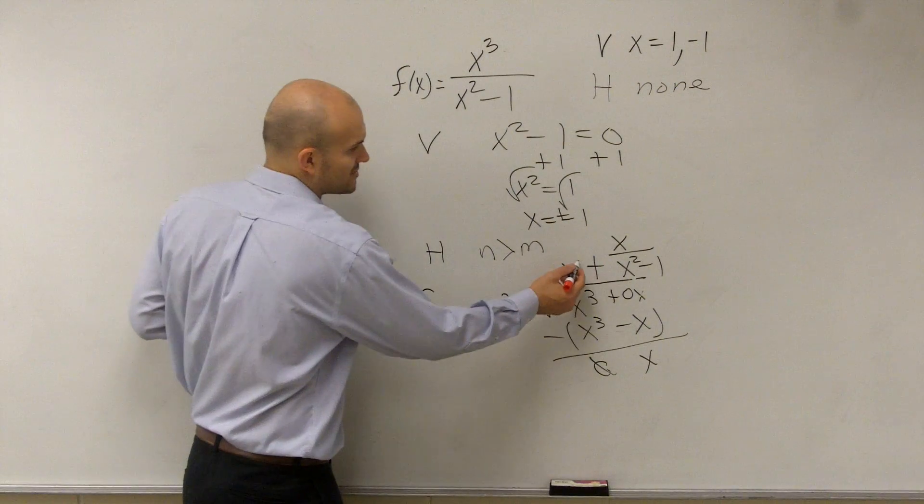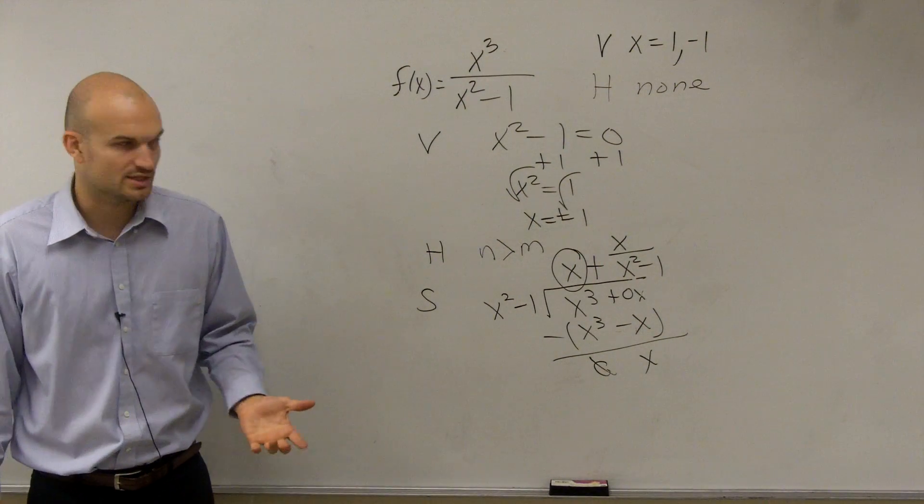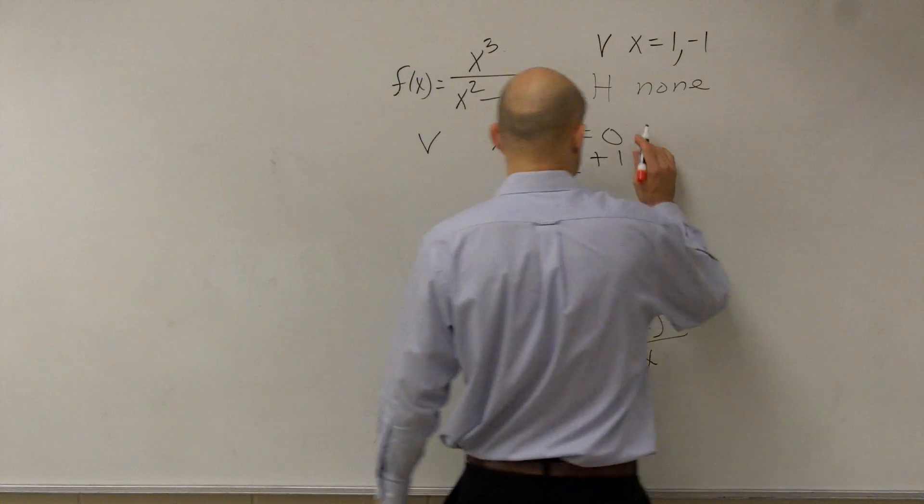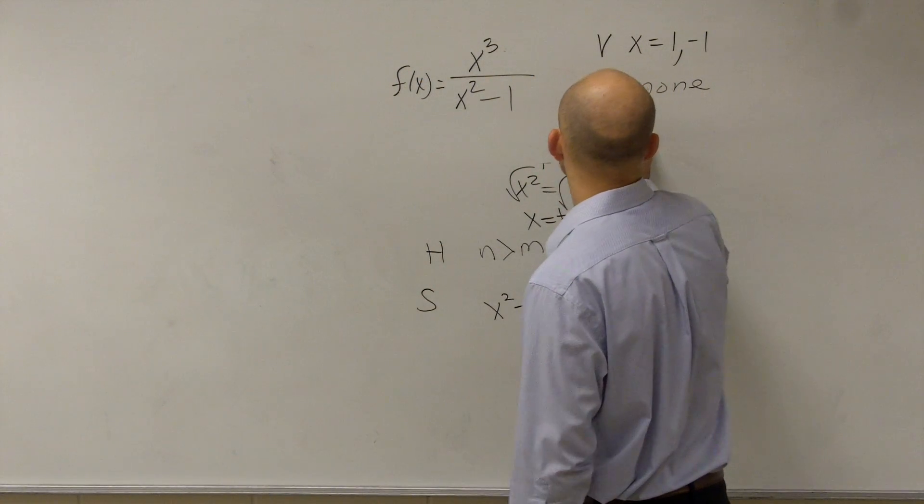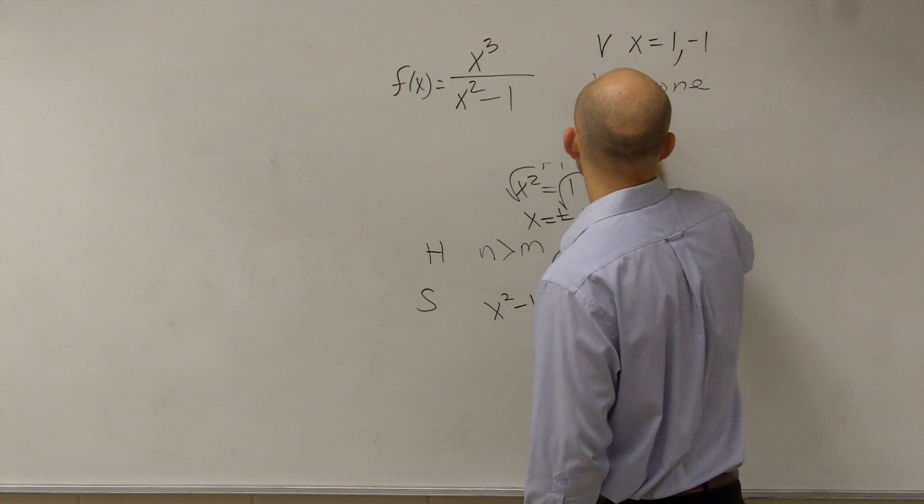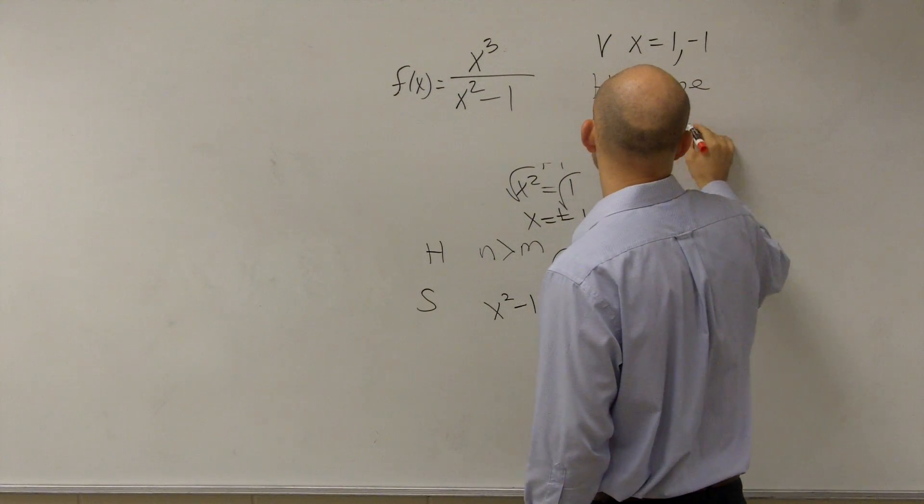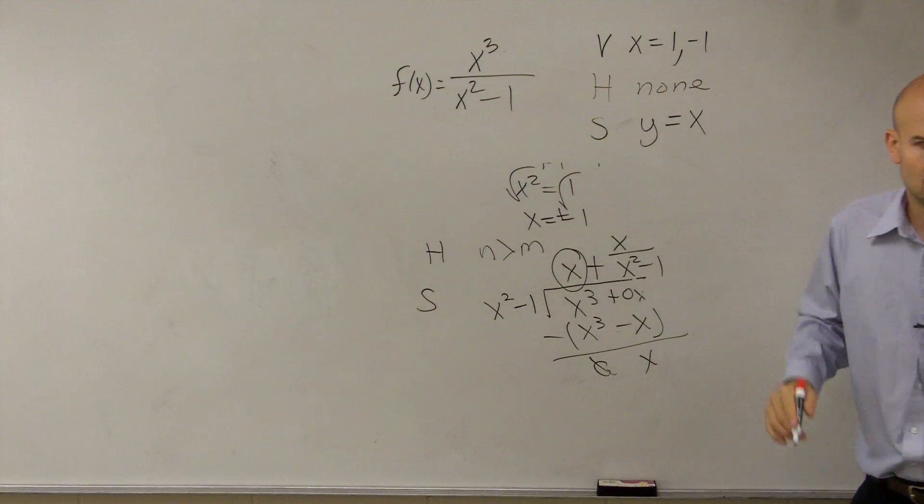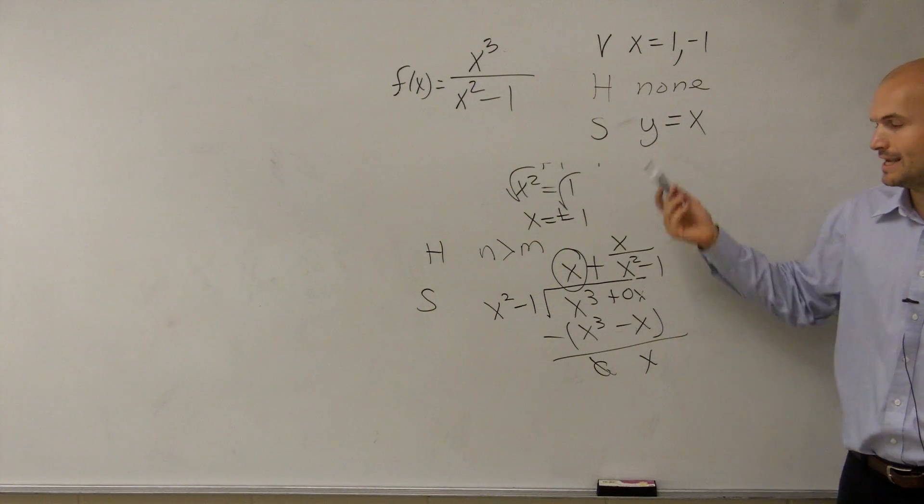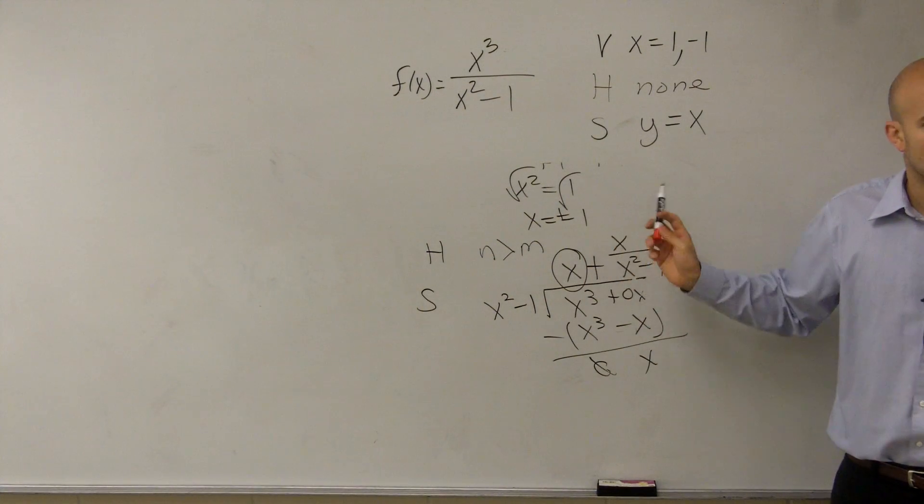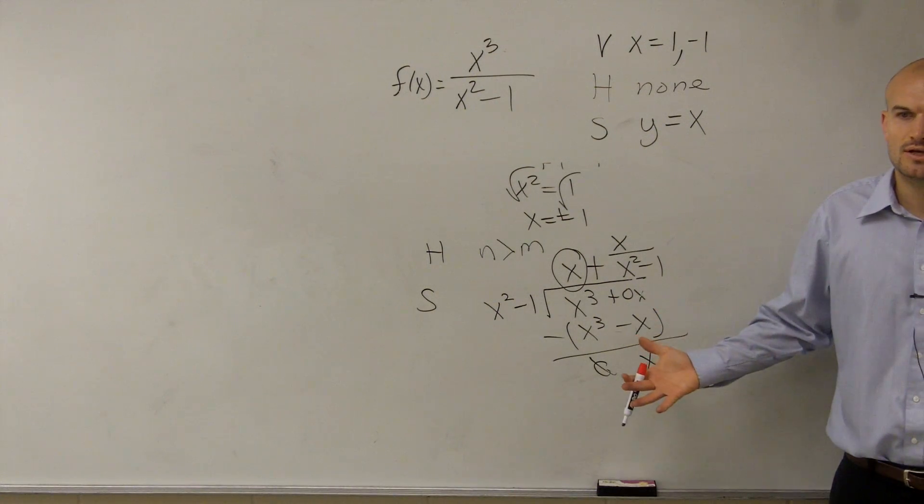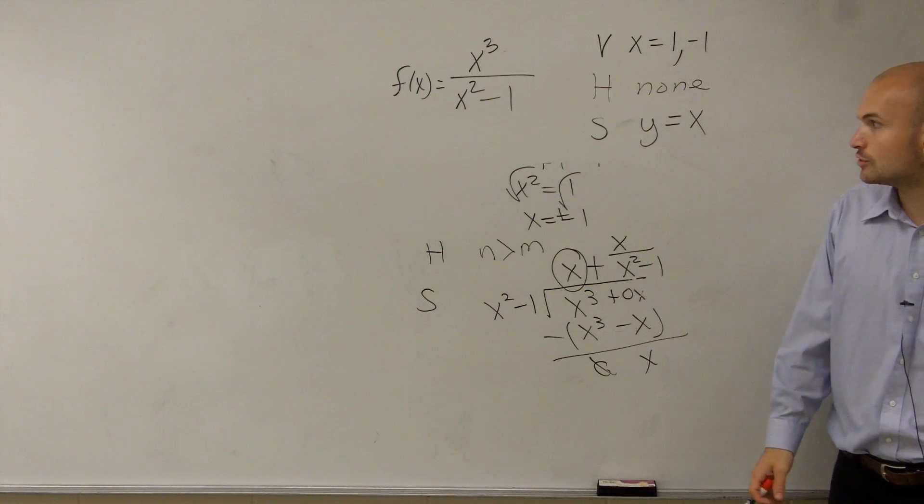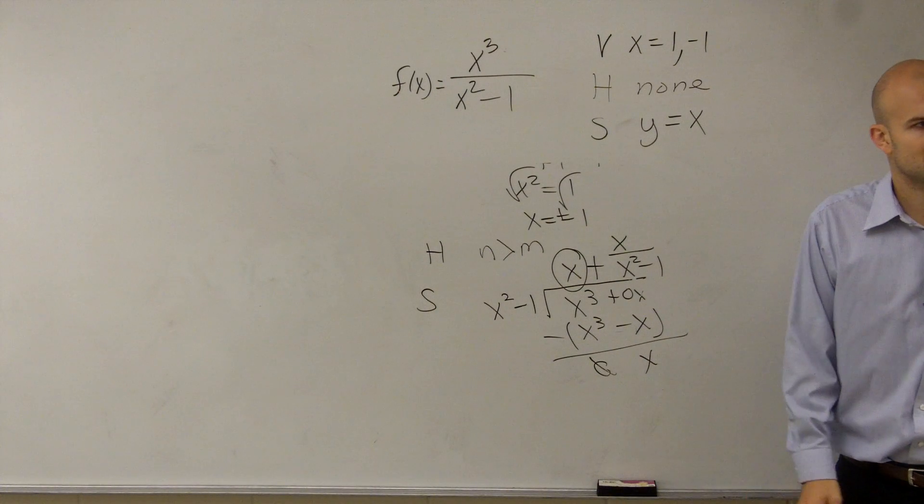So all we're going to be concerned about is just our quotient. So our slant asymptote is a linear equation, y equals x. So you take y and you set it equal to your quotient without dealing with the remainder. So just do long division and then determine what your quotient is. And that's going to be your slant asymptote.